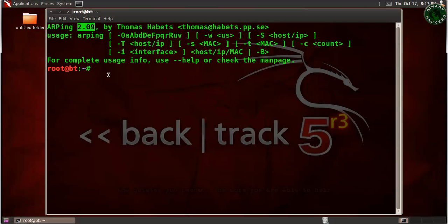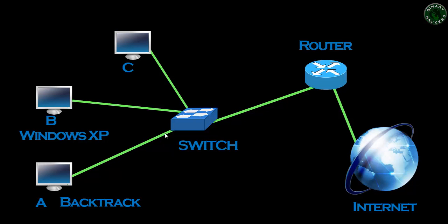The version of arping is 2.09. Before using this, let me show you the theory of how arping actually works on your broadcast domain. This is our lab: Host A is the Backtrack machine, Host B is a Windows XP machine, and these hosts A, B, and C are connected to a switch. All machines are in a LAN and in one broadcast domain. The switch is connected to a router, and the router is connected to the internet.